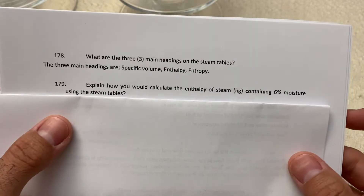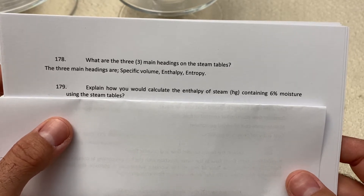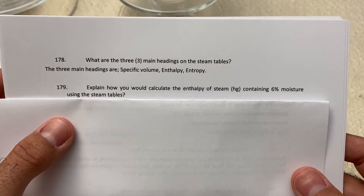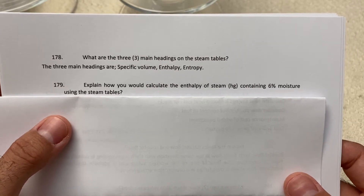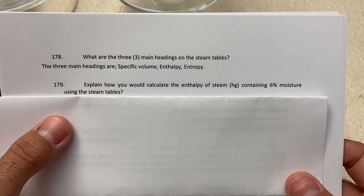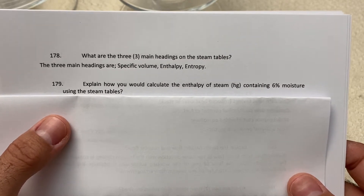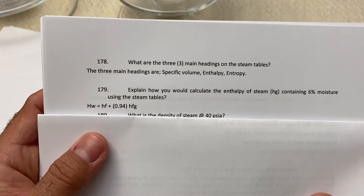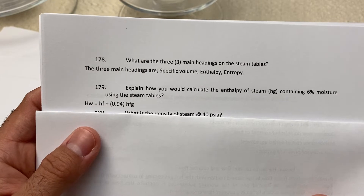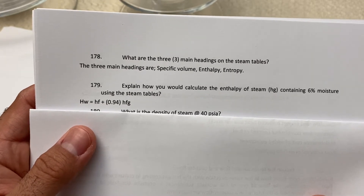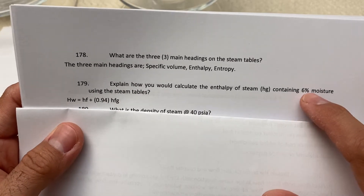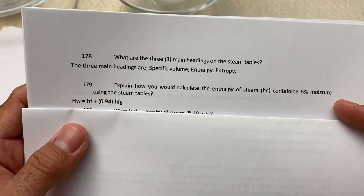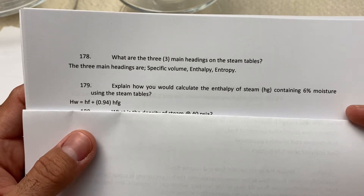Explain how you would calculate the enthalpy of steam containing 6% moisture using the steam tables. The calculation is H equals HF plus x times HFG, where x is 0.94 — because six percent moisture means you subtract 6% from 100%, giving you 0.94. That factor gives you the answer for the six percent moisture condition.